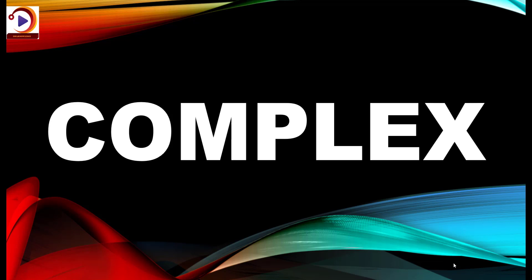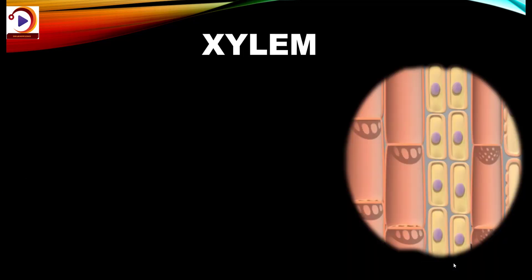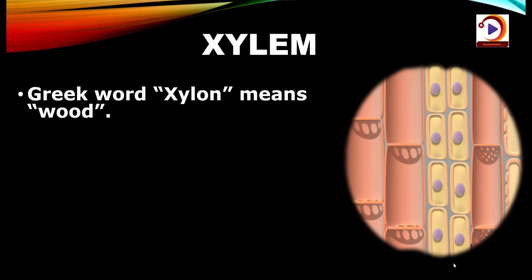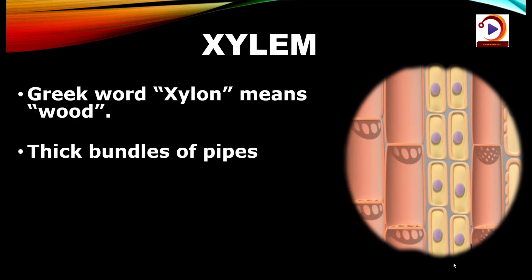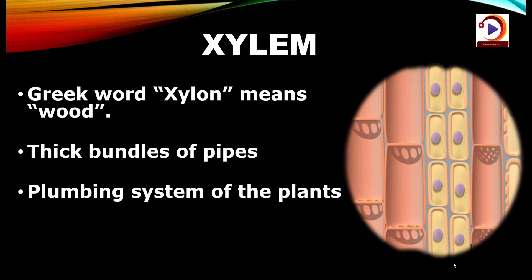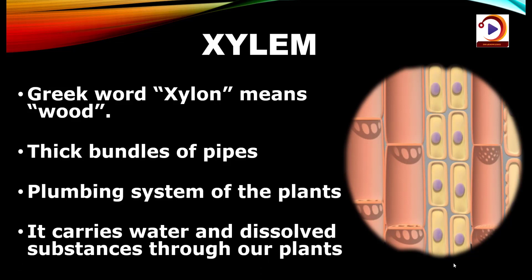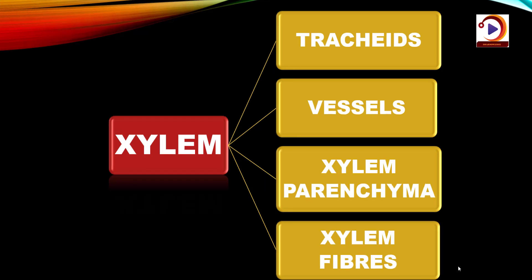Now let's look at complex permanent tissues. There are two types: xylem and phloem. Xylem consists of dead and thick-walled cells and is the water-conducting element — responsible for transportation of water — which also provides mechanical strength to the plant. Water is given to the roots and transported upward to leaves and stems, so the movement is unidirectional — from roots to other parts of the plant. Xylem can be further divided into four components: tracheids, vessels, xylem parenchyma and xylem fibres.